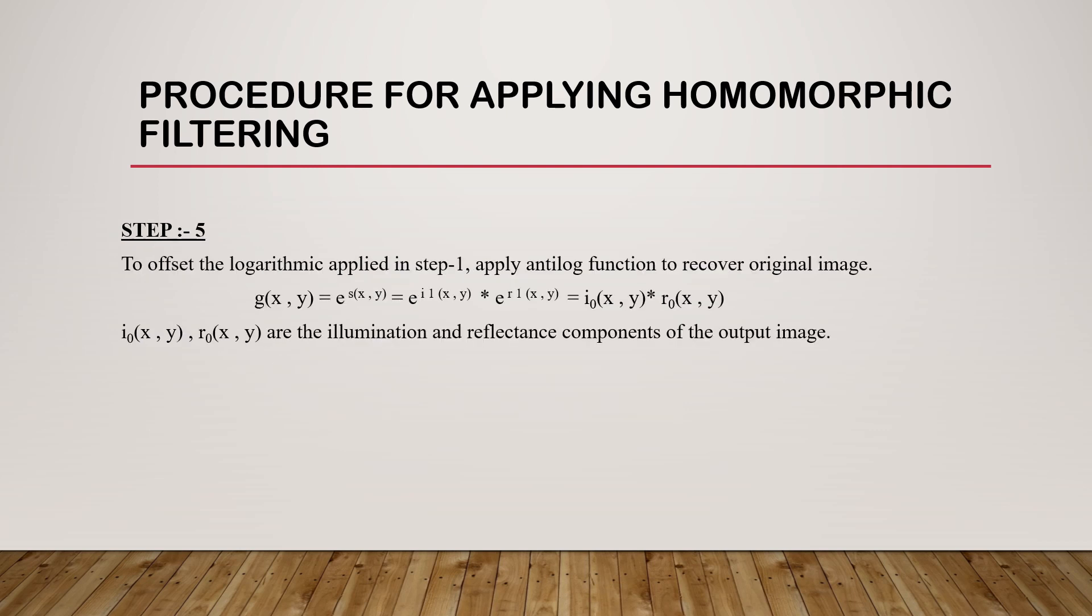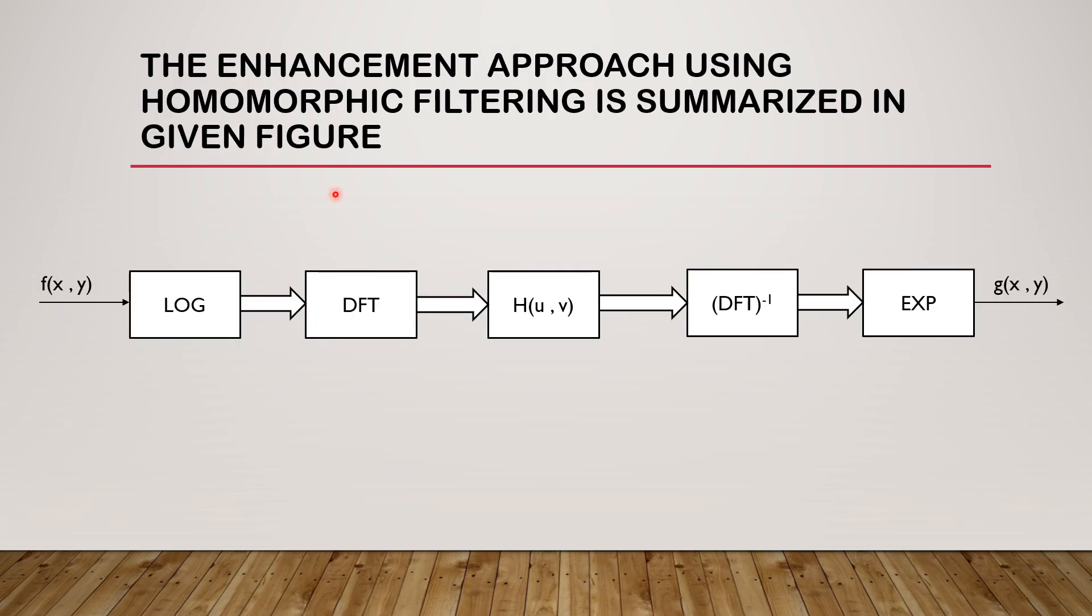And the last step includes offset the logarithmic applied in step one. Apply the anti-log function to recover the original image g(x,y) = e^s(x,y) which is equal to e^i'(x,y) * e^r'(x,y) which is equal to i0(x,y) * r0(x,y), where i0(x,y) and r0(x,y) are the illumination and reflectance components of the output image.